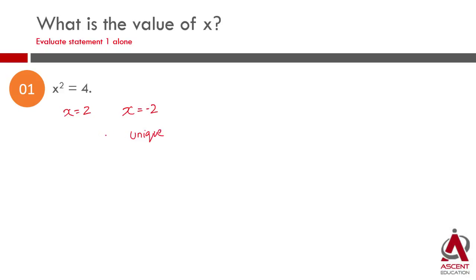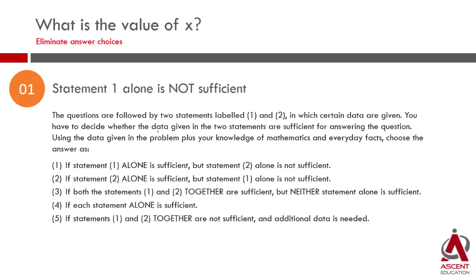We are not getting a unique answer. Therefore, statement one is not sufficient. Definitely answer choice 1 can be eliminated. We can also eliminate answer choice 4, which says each statement is independently sufficient. So what are we left with? We are left with answer choices 2, 3, or 5.